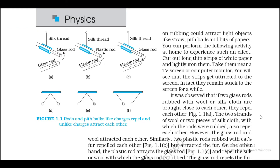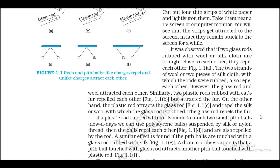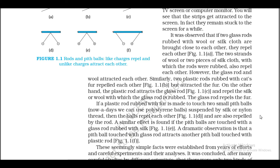It was observed that if two glass rods rubbed with wool or silk cloth are brought close to each other, they repel each other (Figure 1.1a). The two strands of wool or two pieces of silk cloth with which the rods were rubbed also repel each other. However, the glass rod and wool attract each other. Similarly, two plastic rods rubbed with cat's fur repel each other (Figure 1.1b), but each attracts the fur. On the other hand, the plastic rod attracts the glass rod (Figure 1.1c) and repels the silk or wool with which the glass rod is rubbed.